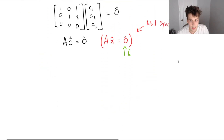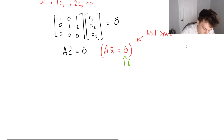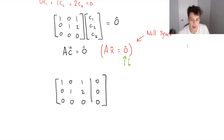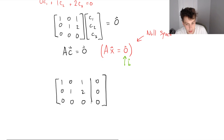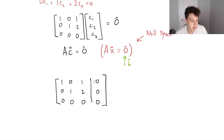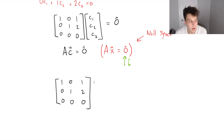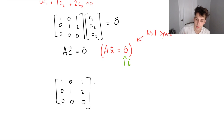To solve this homogeneous system, we row reduce our matrix. The matrix is [1, 0, 1; 0, 1, 2; 0, 0, 0]. For a homogeneous system, there's an implicit column of zeros on the right-hand side after the vertical line, but since it's all zeros we often don't write it. Just keep in mind that column is always there. When we row reduce, we are solving for C1, C2, C3 — those are the solutions we read from the reduced matrix.